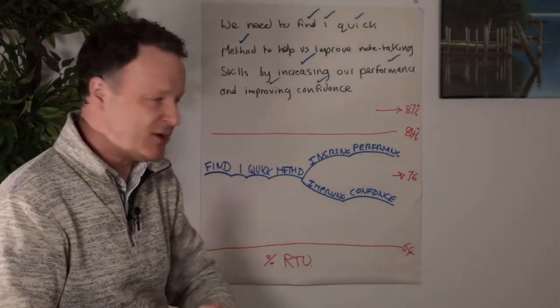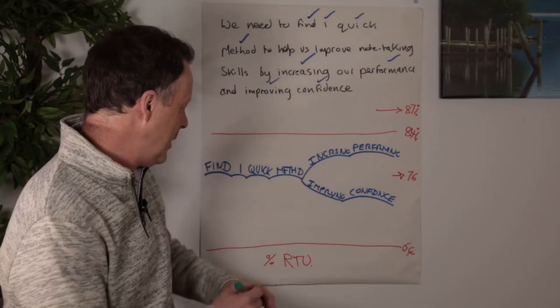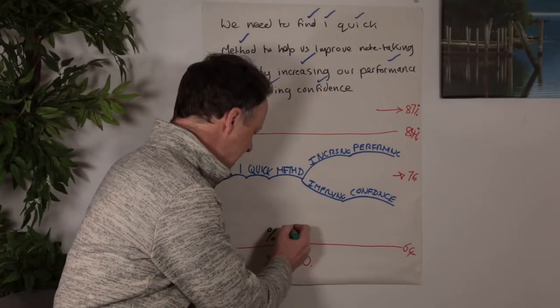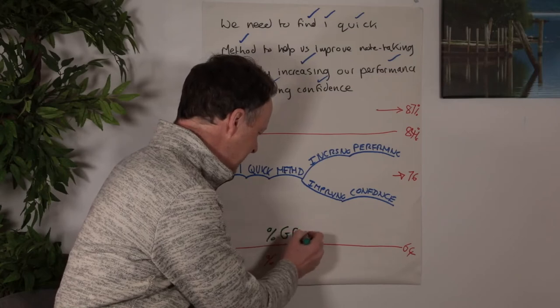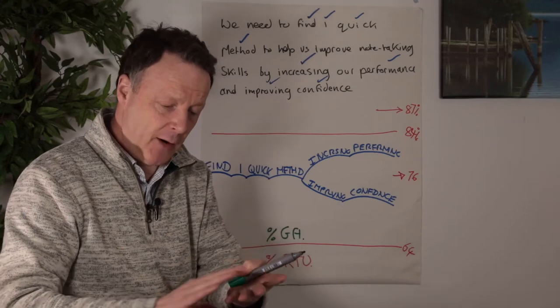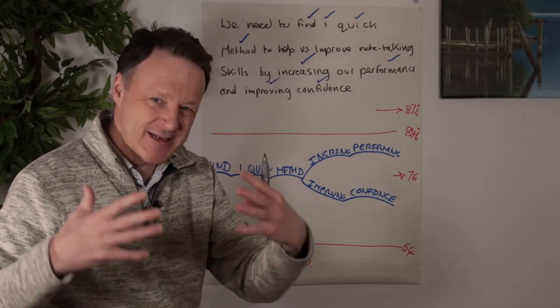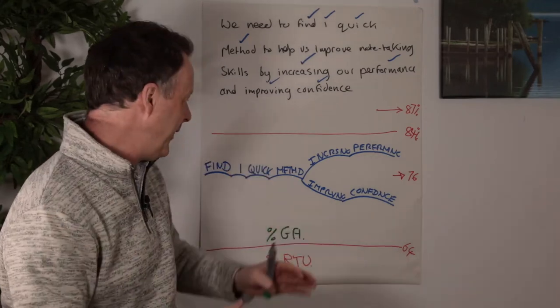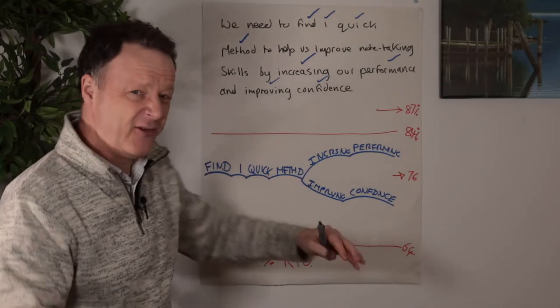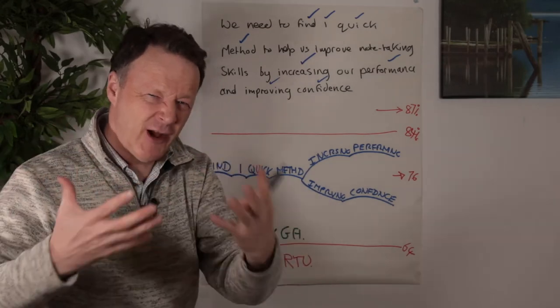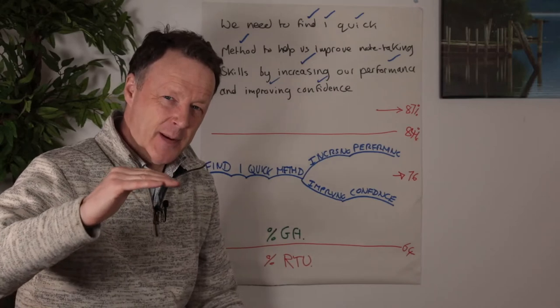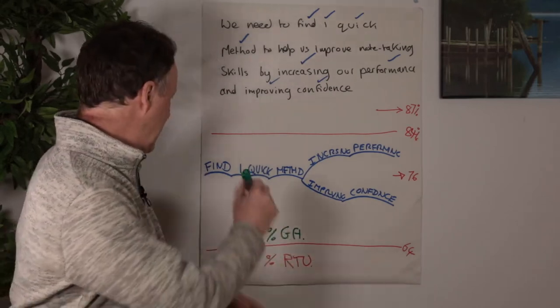Now, the next magical thing is by getting into this format, it straightaway increases your percentage GA, which is glance access. Because another element of next generation note-taking, which is the third element, is dynamic structuring. So you're always looking at finding the optimum headings, the optimum subheadings, you're always looking at how to chunk information well. And by doing this, this increases the power of that one page.